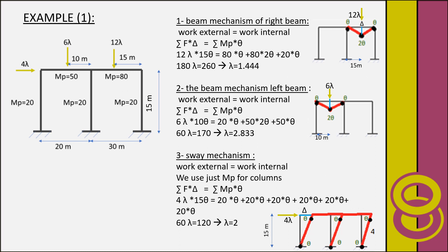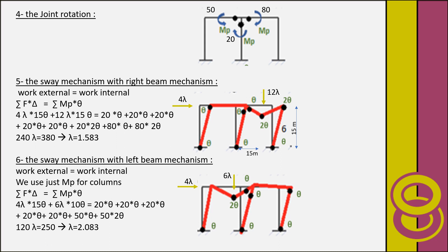The second step — beam mechanism for the left beam — follows the same procedure, and lambda equals 2.833. Going to the third step, the sway mechanism: this sway mechanism is due to the horizontal force. We use only the plastic moment for the columns, following the same equation.